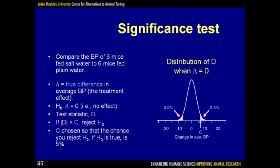Let's summarize statistical tests. We compare the blood pressure of six mice fed salt water with that of six mice fed plain water. Let delta denote the true difference between the two underlying averages — the treatment effect. Our null hypothesis is that delta equals zero. We have a test statistic D, and we reject the null hypothesis if the absolute value of D is greater than some critical value C, chosen so that if the null hypothesis were true, the chance of falsely rejecting the null is controlled at 5%.